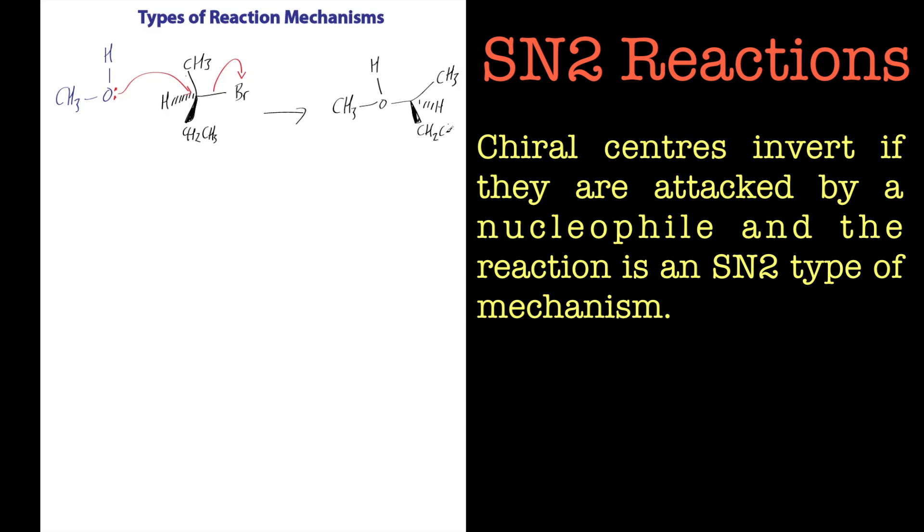CH2, CH3, so an ethyl group on there like that. And this is still positively charged, and we've got our bromide ion. OK, so the first thing to note here is that this chiral center is inverted, so it's flipped over about this point.